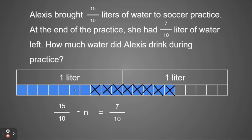Notice now she has one, two, three, four, five, six, seven tenths left. So since we were able to cross out eight tenths, N is going to equal eight tenths. That's the amount that she drank.